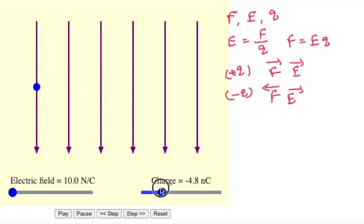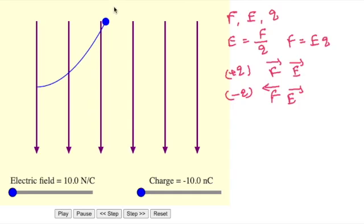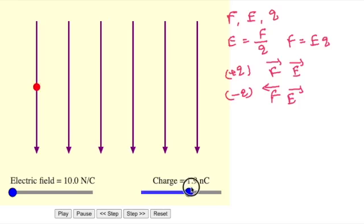Now I will change the charge to negative. See here — previously it was deflected in the direction of the electric field. Now it is deflecting in the opposite direction of the electric field, since the charge is negative. So from this simulation we can conclude that the force on a positive charge is in the direction of the electric field, and the force on a negative charge is in the opposite direction to the electric field.